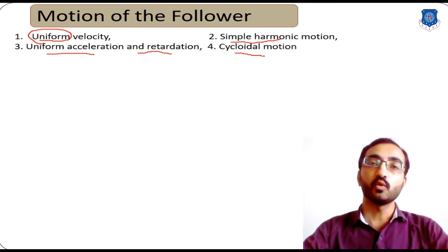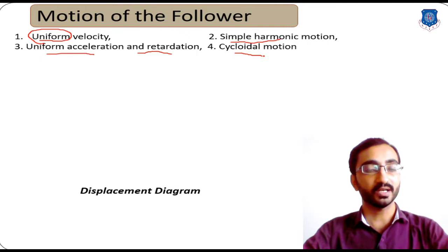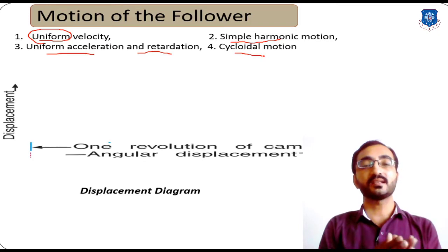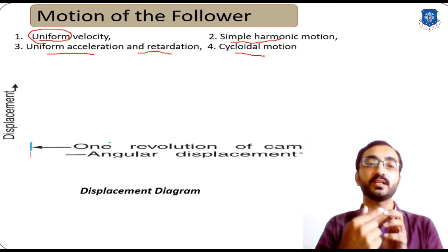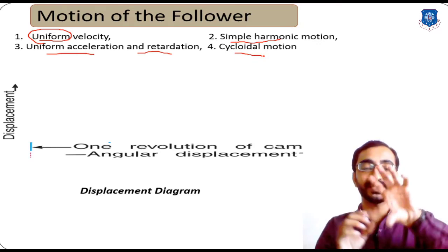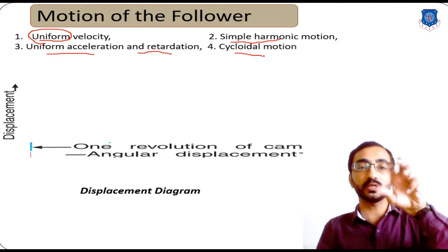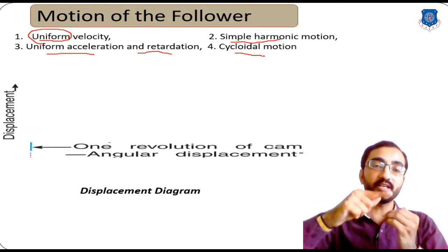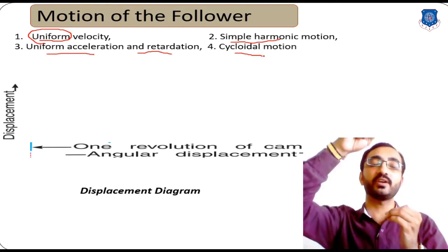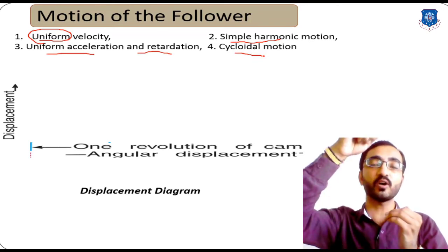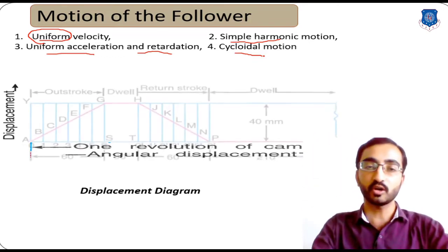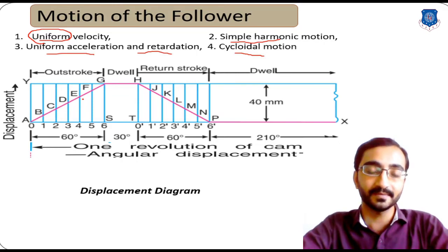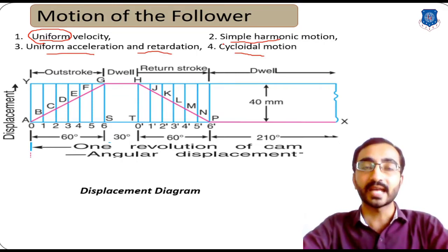According to this motion, we have to plot a displacement diagram. The displacement diagram is nothing but a graph between two terms: the rotation of the cam — considering one full rotation, that is 360 degrees — and how much the follower is moving, either in the upward direction (rise) or in the downward direction (return) during that revolution. We will learn this displacement diagram one by one for each type of motion.